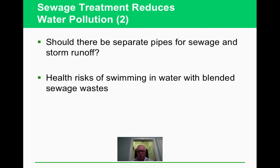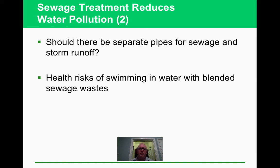One issue is that sewers often combine both sewage and storm runoff in the same pipes. When both arrive at the wastewater treatment plant simultaneously, the plant must treat much higher volumes, increasing the risk of untreated water reaching swimming areas.